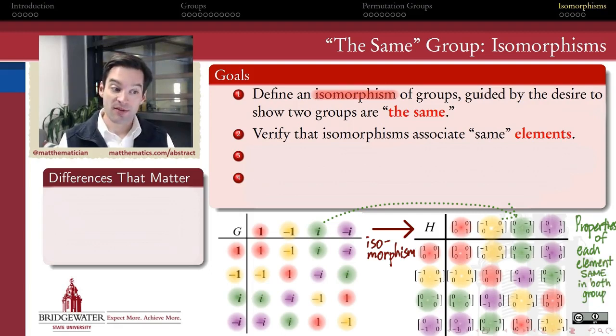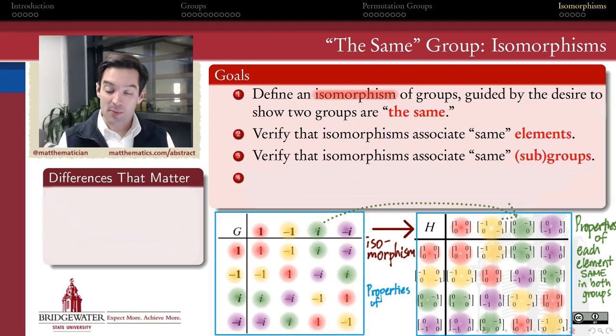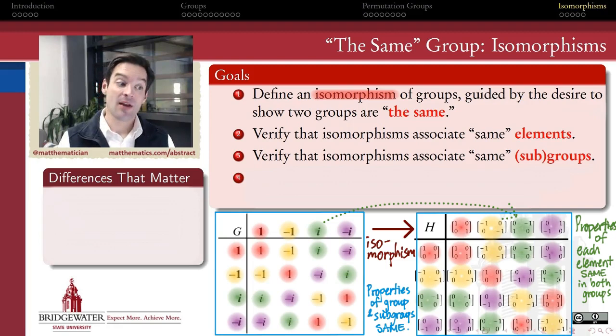But we want more to be true than just that. We don't just want the properties of every element in these groups to be the same under an isomorphism. We further want to verify that the properties of entire collections of elements within those groups, specifically subgroups, in addition to the whole group itself, that the properties that attach to those collections of elements are also the same across an isomorphism. So isomorphisms don't just tell me things about sameness of elements, they also tell me something about sameness of groups and subgroups.